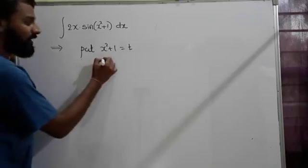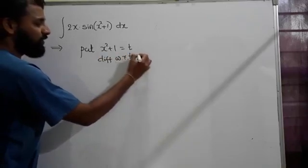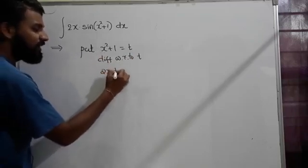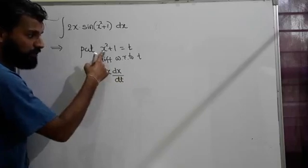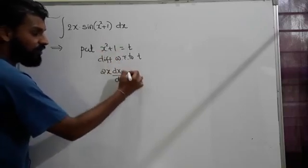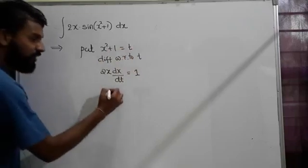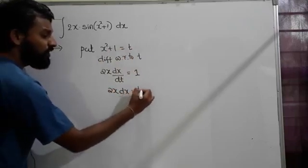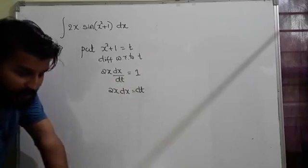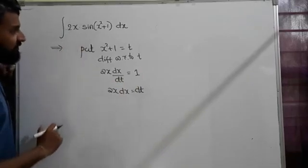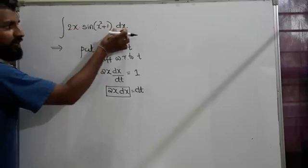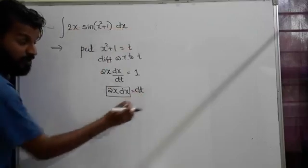Let's see. Differentiating with respect to t: x² differentiated is 2x·dx/dt, plus 1 is zero, so 2x·dx = dt. Now if I see my question: see, this 2x and dx both are here itself. So 2x·dx, in place of that I can write dt.